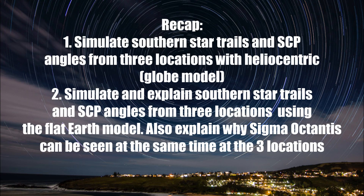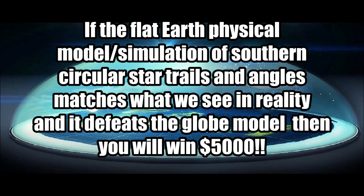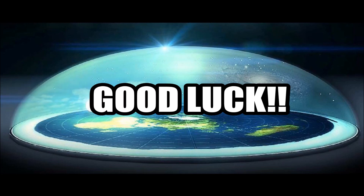Here's a recap: you must simulate the southern star trails and the south celestial pole angles from three different locations using both the heliocentric model and the flat earth model. You must explain why you can see Sigma Octantis from three different locations at the same time. If the flat earth physical model simulation of the southern circular star trails and angles matches what we see in reality and defeats the globe model, then you will win $5,000. Good luck!